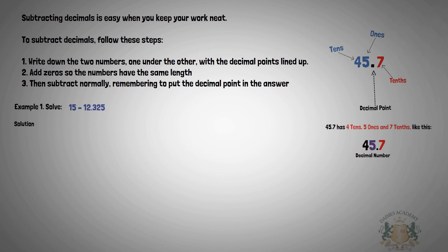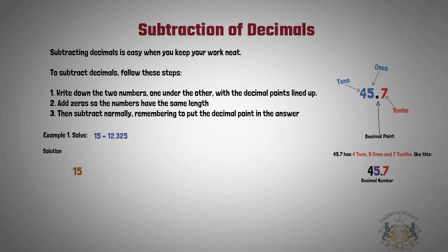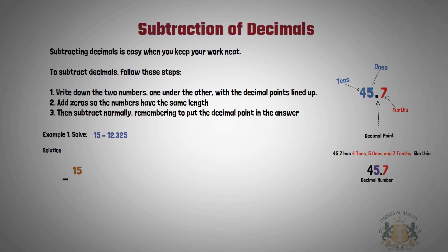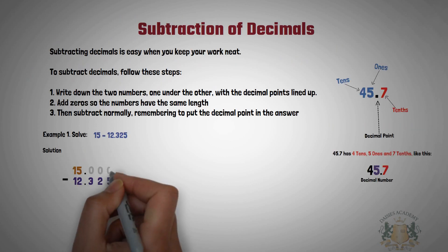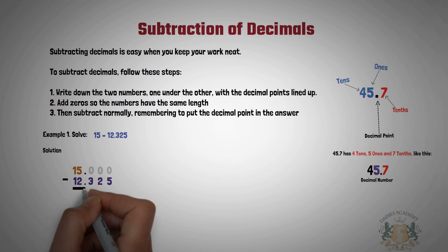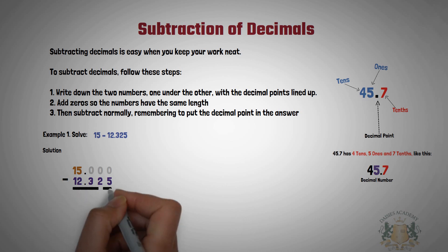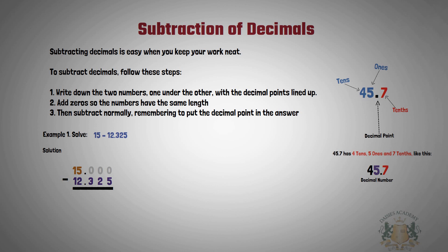Write down the numbers according to their place value, as we did in our last lesson. So you're going to have 15 minus 12.325. If you look at 15, there's no number after it, so you can put your decimal point and add zeros: 15.000 is still the same thing as 15. We do this because 12 has three different figures after the decimal point, so we need three zeros here too to have a balance.